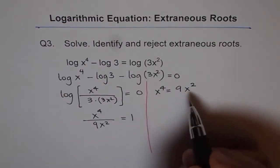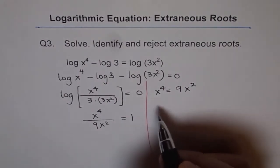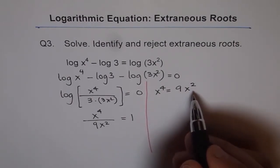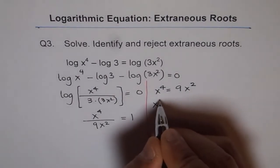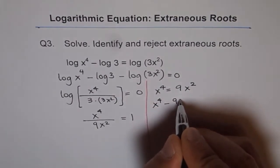I've seen some students cancelling out x squared. I'll show you that that will take away a couple of solutions from there. So let's bring it on the left side and we get x to the power of 4 minus 9 times x to the power of 2 equals to 0.